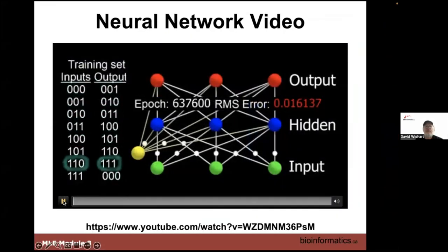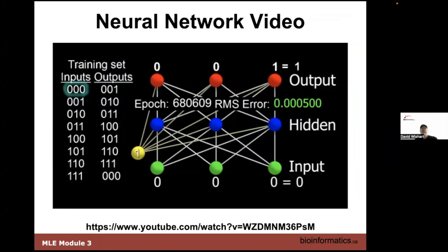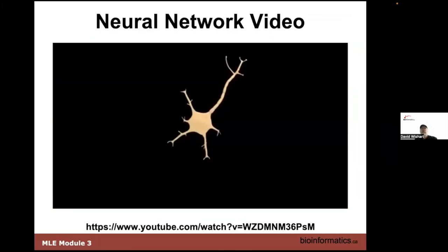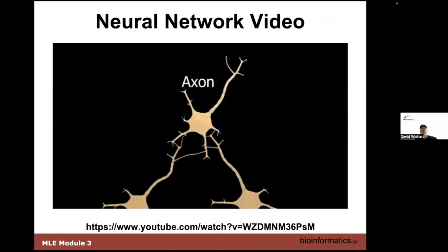What's a neural network? A neural network is a type of program that learns how to do things, instead of being hand-programmed. It's inspired by the neural networks in your brain. Your brain contains around 100 billion neurons, which have dendrites to receive signals from other neurons and axons to send their own signals. When a neuron receives the right mix of signals on its dendrites, it sends out its own signal on its axon.